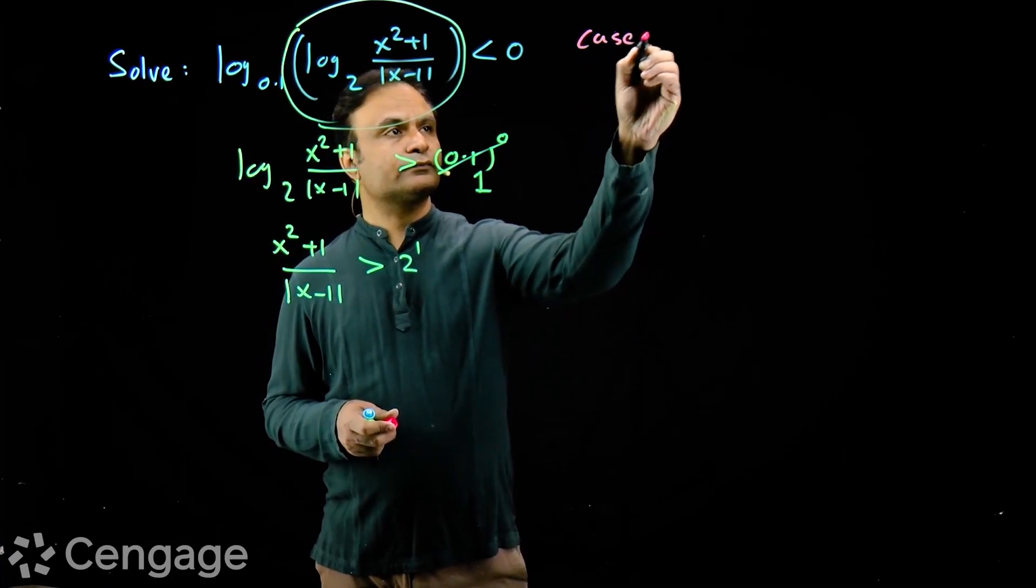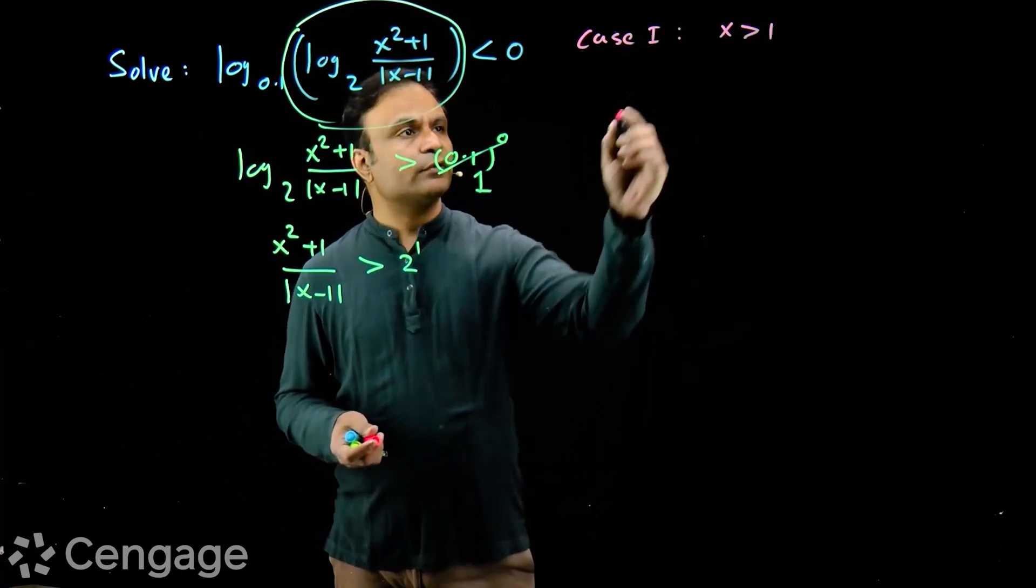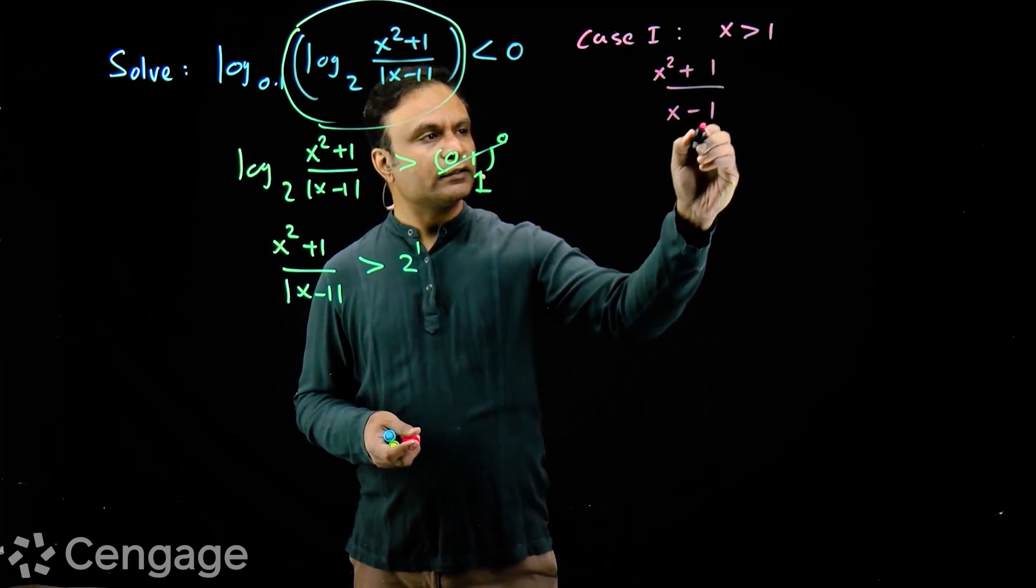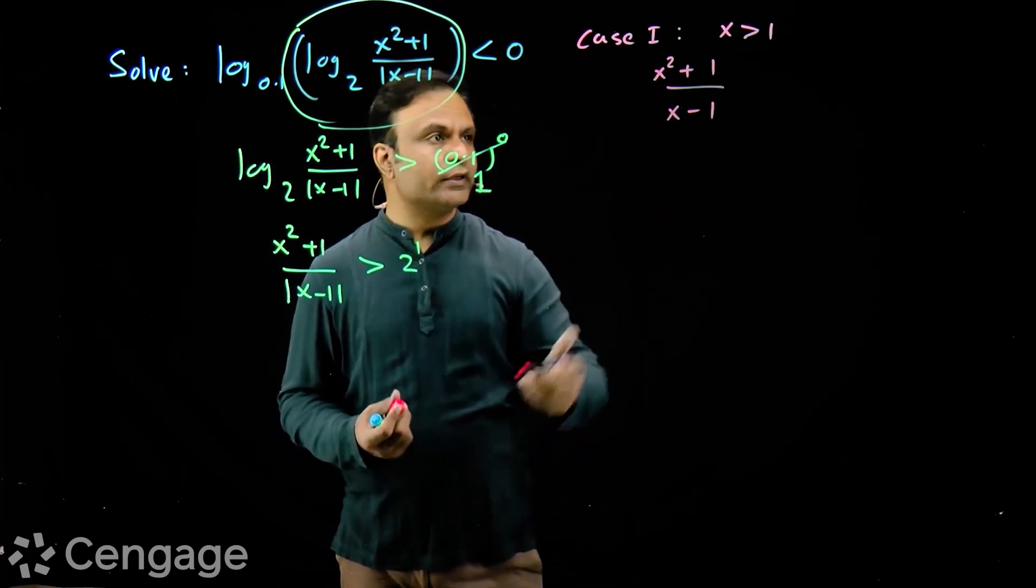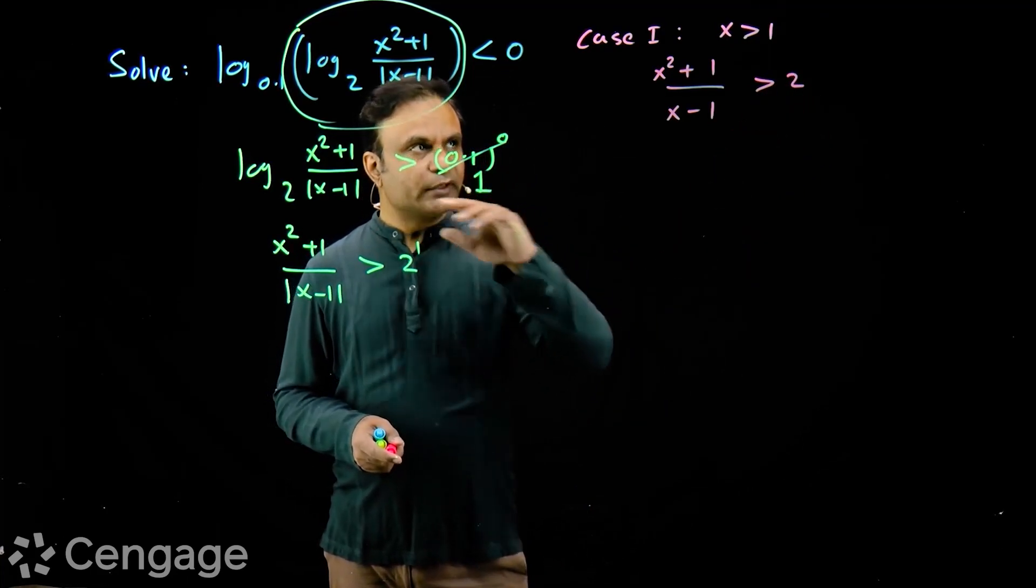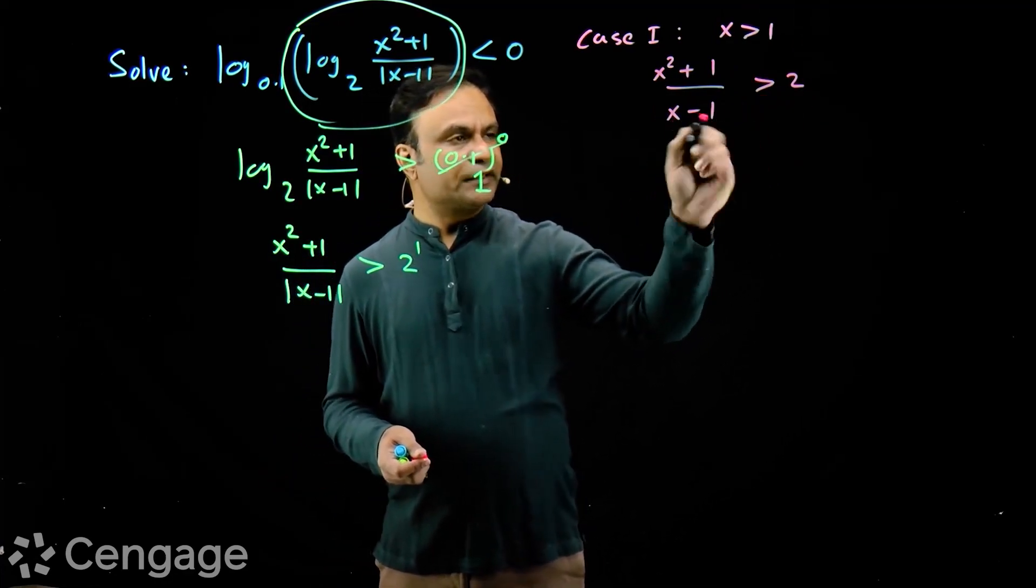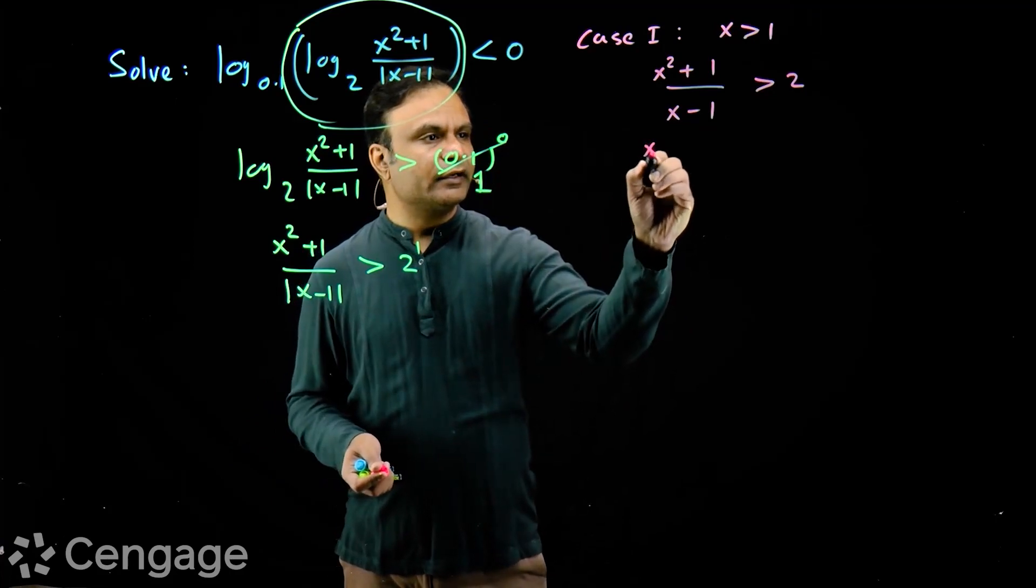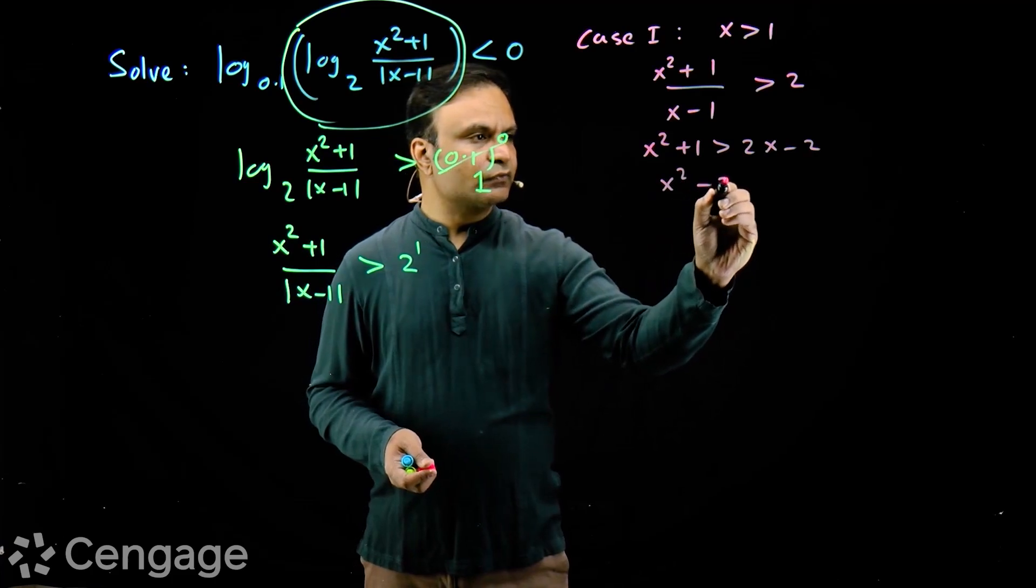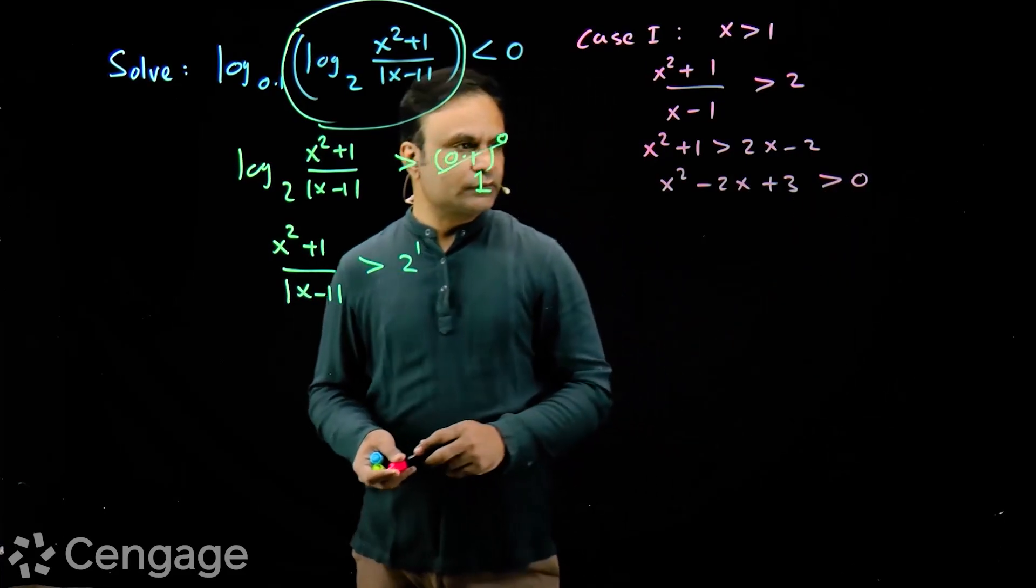Case 1 when x is greater than 1. At that time, mod x minus 1 will be x minus 1. We have x square plus 1 greater than 2x minus 2, or x square minus 2x plus 3 greater than 0.